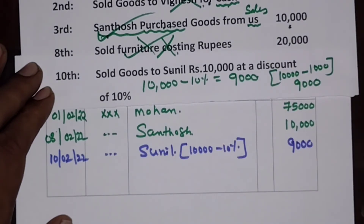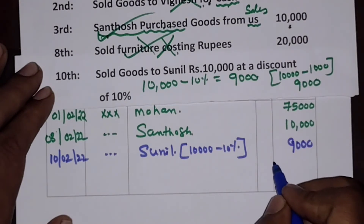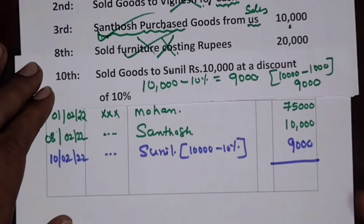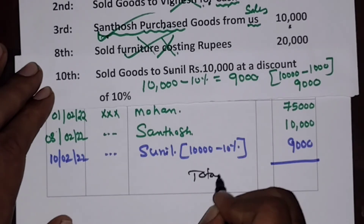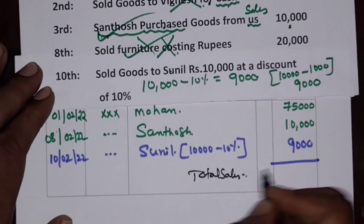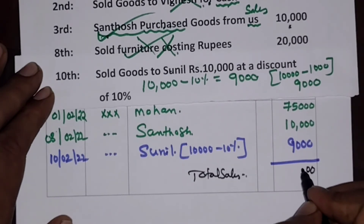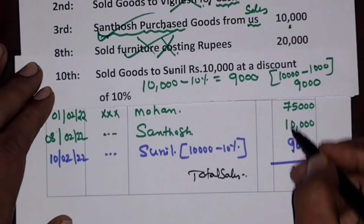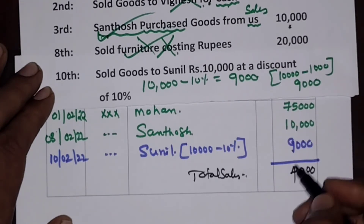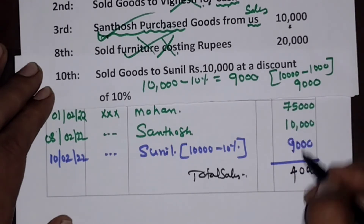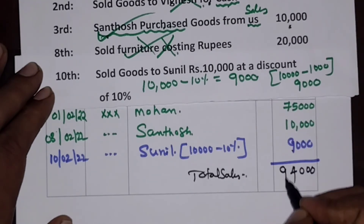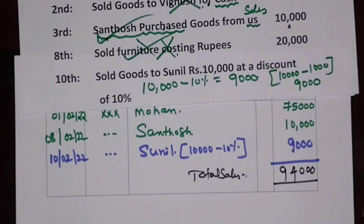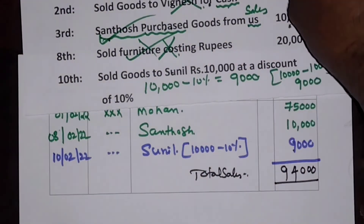That completes all the sales entries. We now make a total for total sales. Total sales equals ₹75,000 plus ₹10,000 plus ₹9,000, which gives us ₹94,000. Thank you very much for watching this problem.